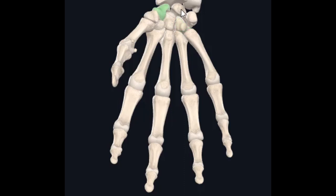Let's try them again using mnemonics first: Some Lovers Try Positions That They Can't Handle. Now let me say them with the scientific names: scaphoid, lunate, triquetral, pisiform, trapezium, trapezoid, capitate, hamate.